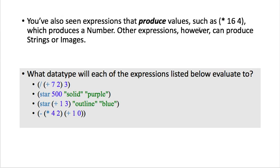So you've seen how expressions produce values. So that star 16, 4, right, would be a multiplication of two numbers, is going to produce a number. Other expressions can produce strings or images. And we just saw how star produced an image. So what data type will each of the expressions below evaluate to? So pause the video, and in your video notebook, just type in what data type you think is going to be for each one of these.